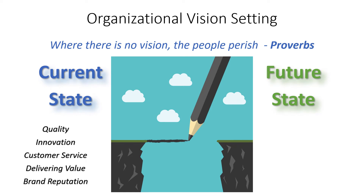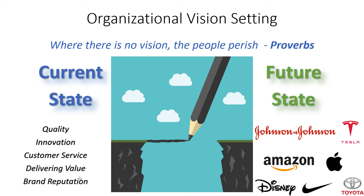When you're creating this vision, think about the different attributes of great organizations. Do you want to be known for quality, innovation, customer service, brand reputation, or delivering value? Pick an attribute that you really care about as a leader and as an organization and build your vision around that attribute. When you're coming up with a future state for your organization, do a little bit of benchmarking — look at other great companies, whether in your industry or not, that do really well at what you want to do: quality like Toyota, innovation like Apple or Tesla, brand reputation like Nike and Disney, or the way Amazon delivers value.